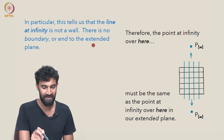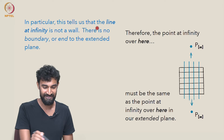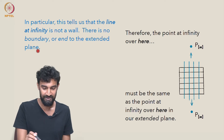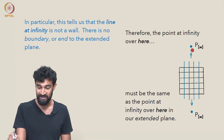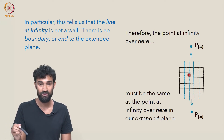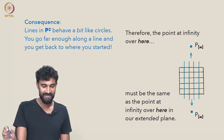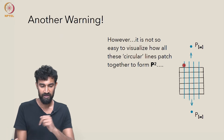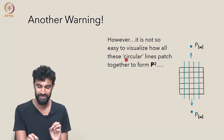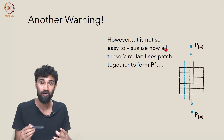This tells us something interesting — or disturbing, depending on how you see it — about the line at infinity: it's not a wall. There's no boundary or end to the extended plane. You can go up through a point at infinity, pass through it, keep going, and come back to where you started. So a consequence is that lines in P2 behave a bit like circles — go far enough along and you get back to where you started. But it's actually not easy to visualize how all these different circles patch together to form the entirety of P2.